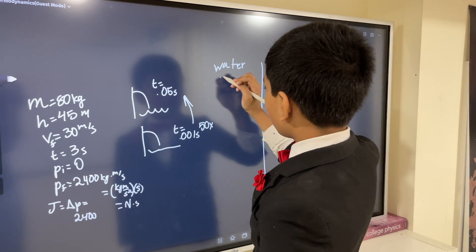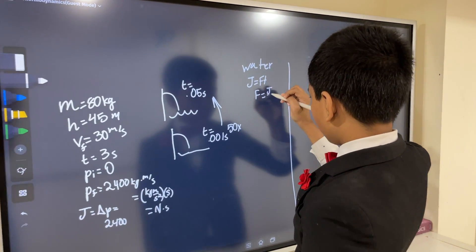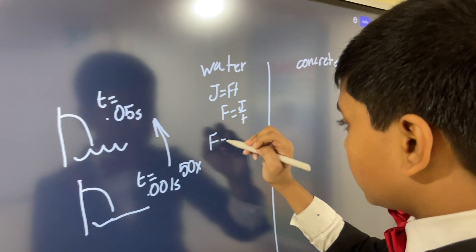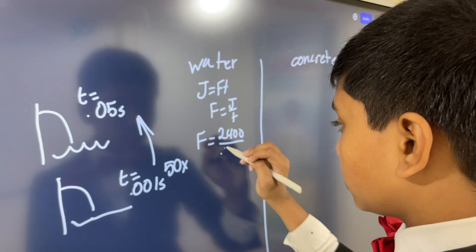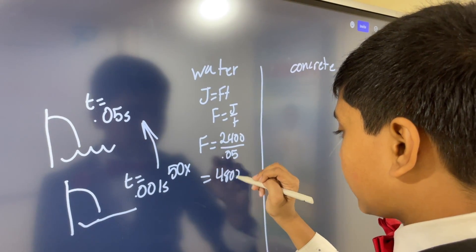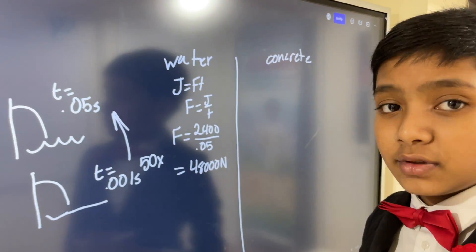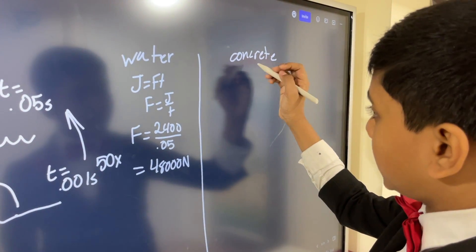so let's do the water situation here and concrete over here. So we know that j is ft, so f is just j over t. Now we know j is just 2,400. We know t is just 0.05. That's 48,000 newtons. You can do this in your head because dividing by 0.05 is basically multiplying by 20.